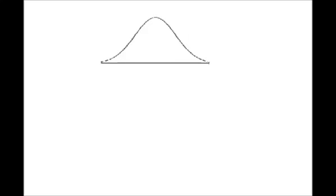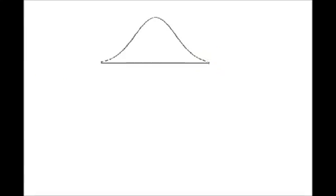This is Stephanie from StatisticsHowTo.com and in this video I am going to briefly show you about skewed distributions. This is a normal curve and it is completely symmetrical so there is no skew. These ends are called the tails of the distributions, and if one of these tails was longer, the distribution would be skewed.